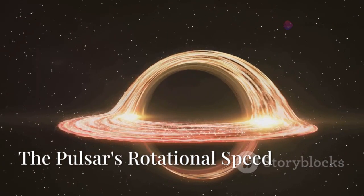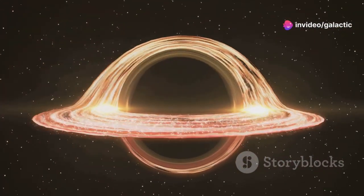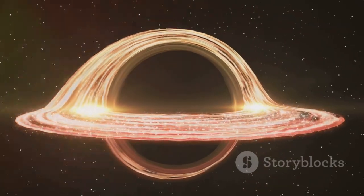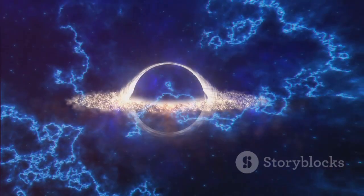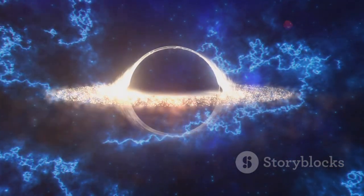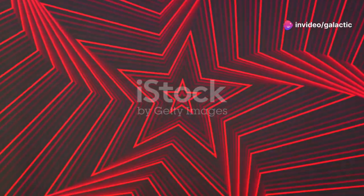Imagine an object spinning so fast that it completes hundreds of revolutions every second. It's almost beyond comprehension, isn't it? Yet, in the vast expanse of space, such objects do exist. That's the reality of PSR J0952-0607, a pulsar that defies our understanding of speed and rotation. This pulsar spins at an astonishing 707 rotations per second, making it one of the fastest spinning objects ever discovered. To put that into perspective, imagine the sheer energy and forces at play to maintain such a rapid rotation.